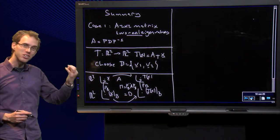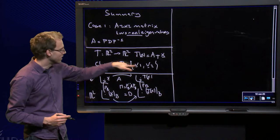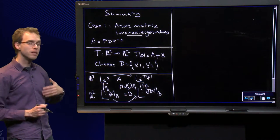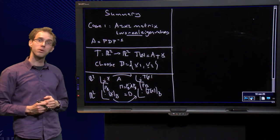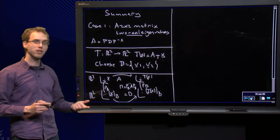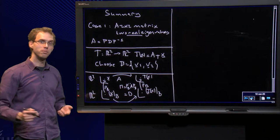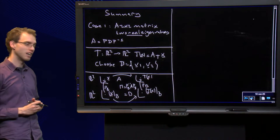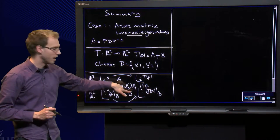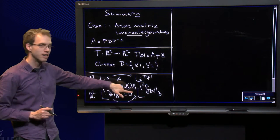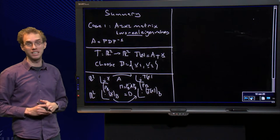And because we chose as basis B the basis of eigenvectors, we know that PB is exactly equal to P, which means that M becomes PB inverse times A, which is PDP inverse, times PB. PB inverse and P cancel out, so M becomes a diagonal matrix. So in the other basis the mapping is represented by a diagonal matrix.